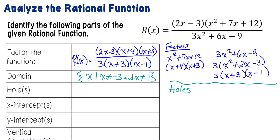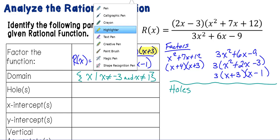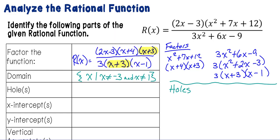For my holes, remember the holes are the common factor. So if I look at this, I see that x plus 3 is common on both the top and the bottom. So I know x plus 3, when I set it equal to 0, that means x equals negative 3. So the hole is at negative 3.